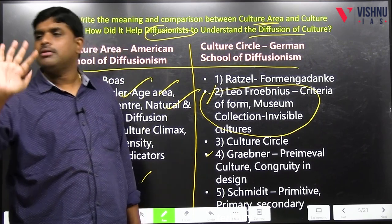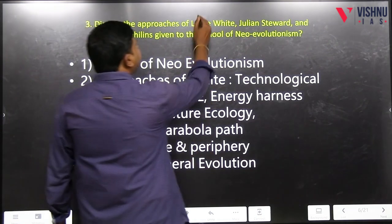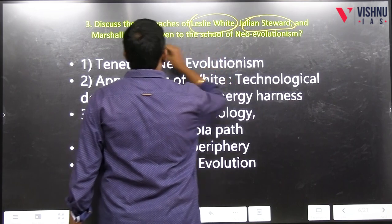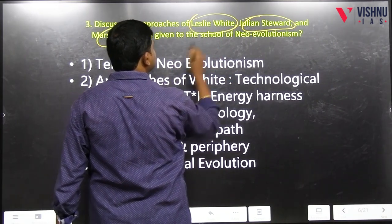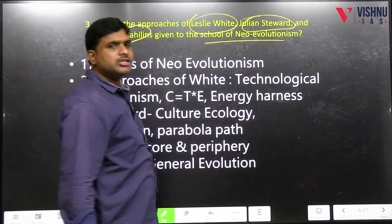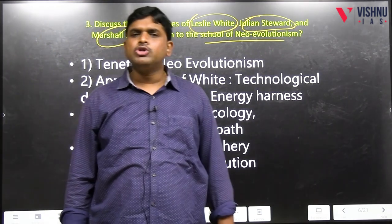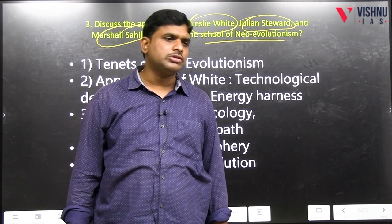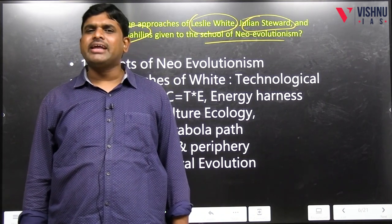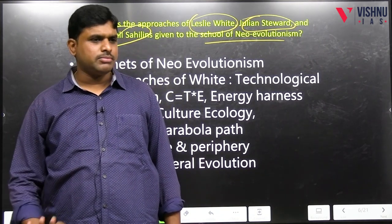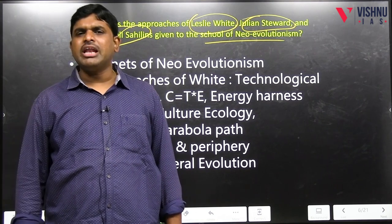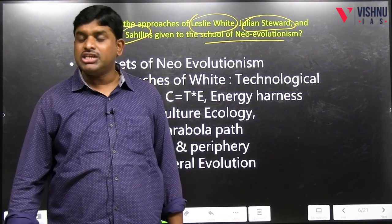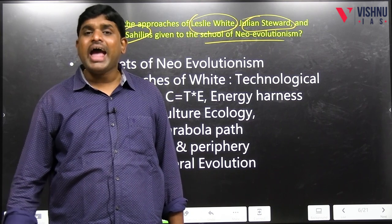Discuss the approach of Leslie White, Julian Steward, Marshall Sahlins given to the school of Neo-Evolutionism. 20th century evolutionism is called Neo-Evolutionism; 19th century evolutionism is Classical Evolutionism. Neo-Evolutionism is more practical when compared to Classical Evolutionism. Neo-Evolutionism is mainly bothered about the importance of technology, energy, and ecology and adaptation.